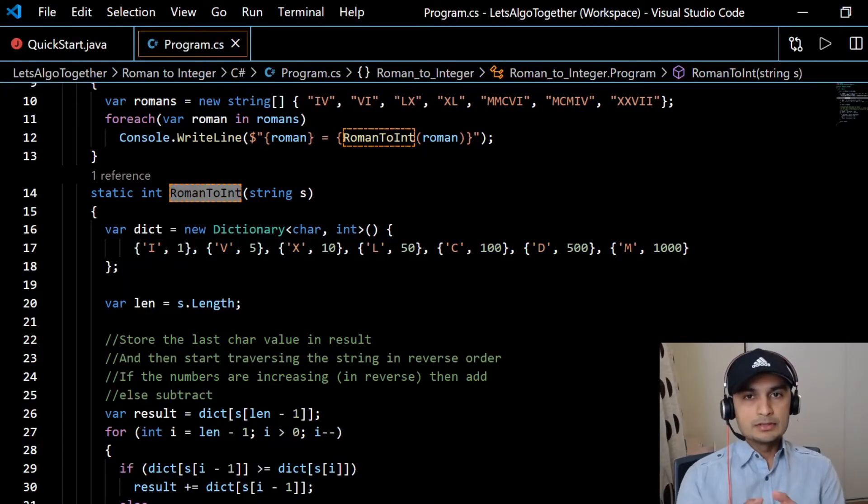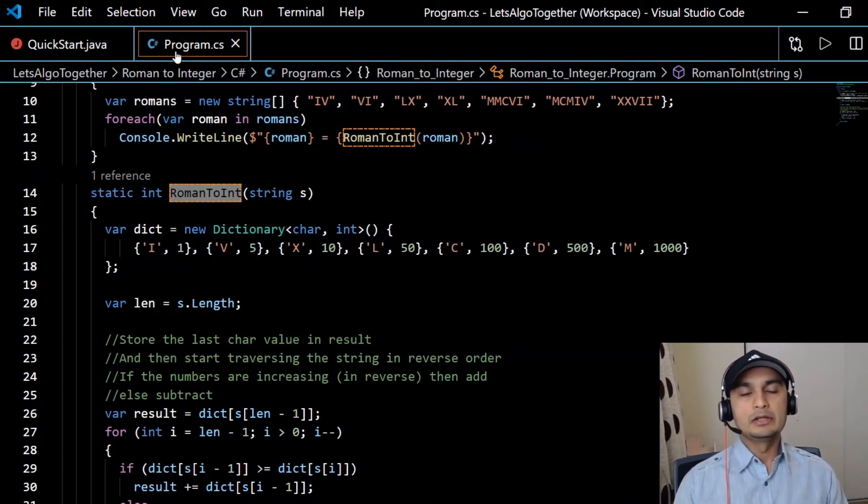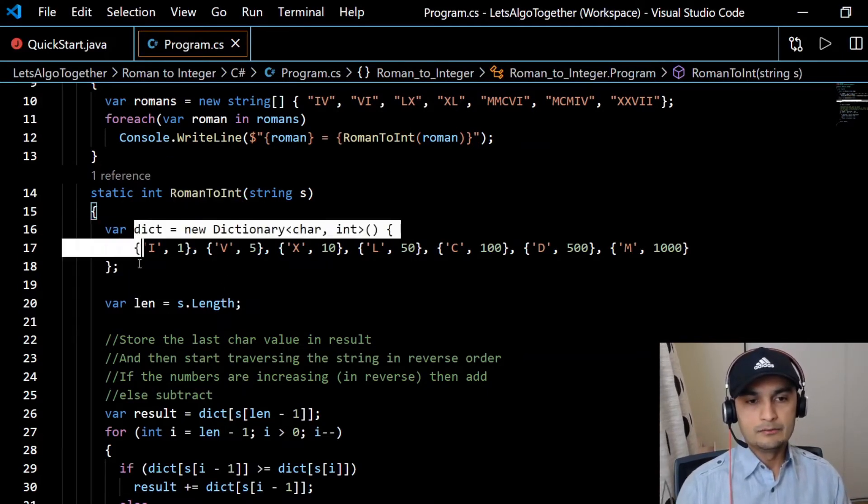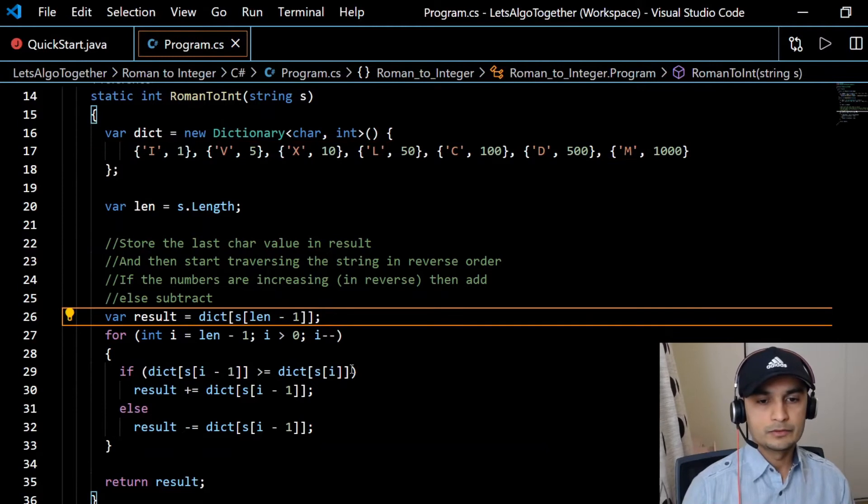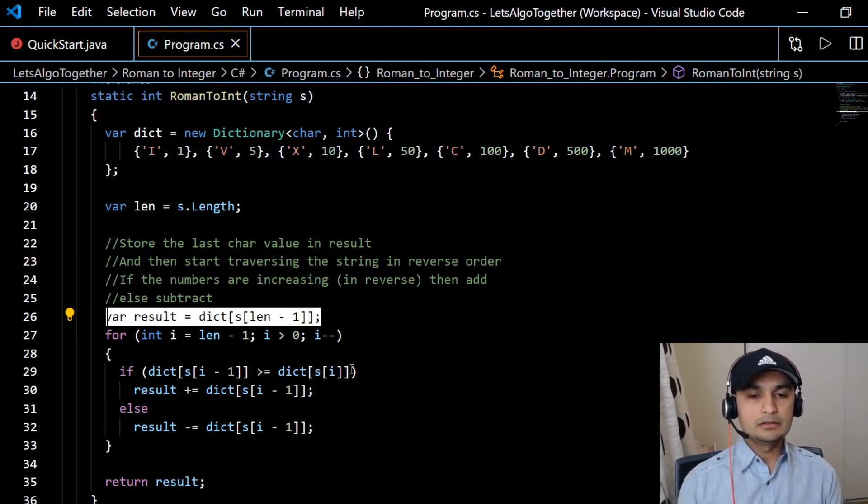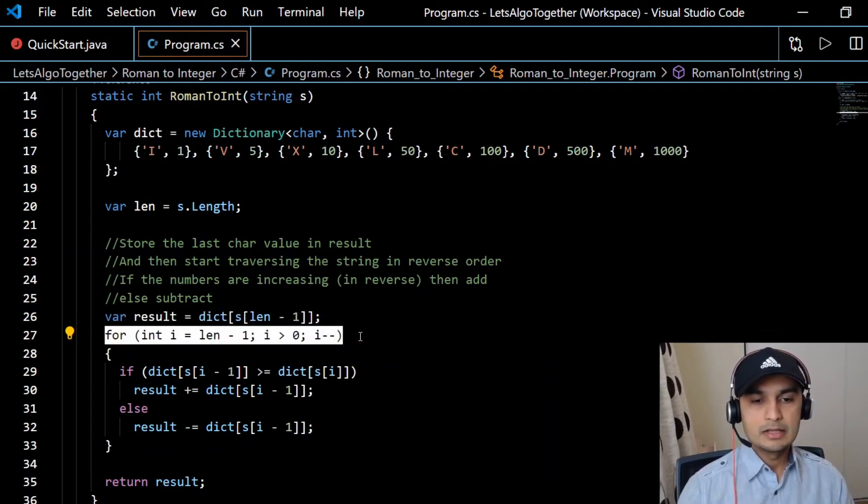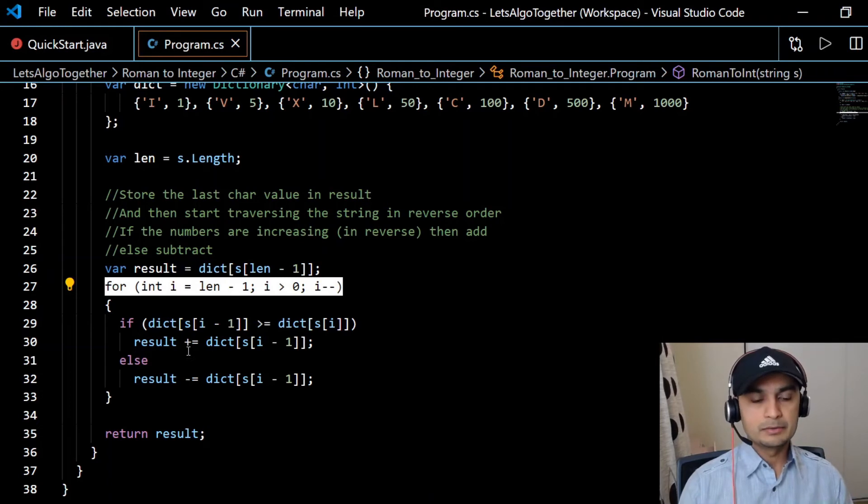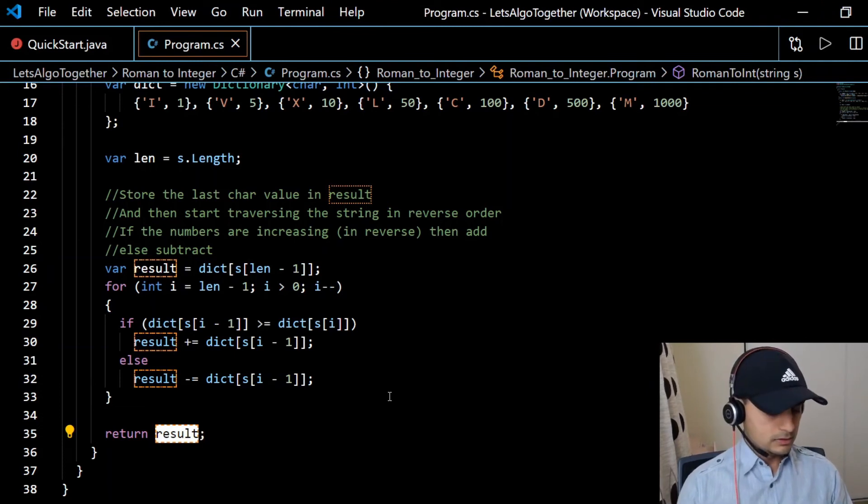Okay, so this is our final C# code. We also have Java code over here, so I'll put link to both the versions in description so you guys have access to both of them. This is our roman to integer method. We are prepping the dictionary for a roman literal to integer value, and then what we do is we pick the last character, so integer value into the result, and then we start traversing the string. And as we discussed, if the incoming next number is bigger than the previous number, then we add, otherwise we subtract, and we return result. So that's it. So let's run it just to make sure that everything is good.